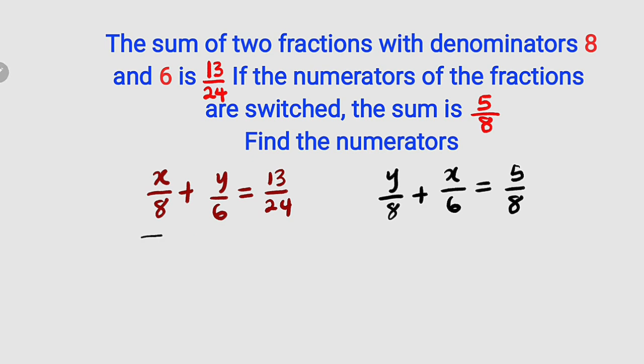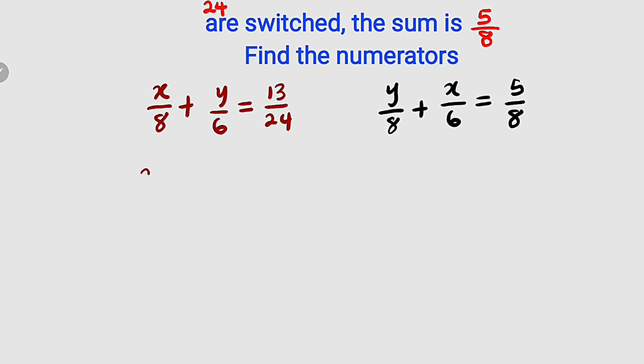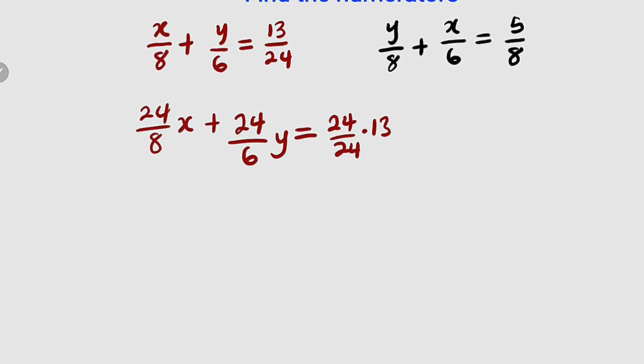First of all, I would like to clear these fractions. The LCM is 24, so I'm going to multiply all of these three terms by 24. So we have 24 divided by 8x plus 24 divided by 6y, and this is equal to 24 divided by 24 multiplied by 13. So if you simplify this, 8 can go into 24 three times, so we have 3x plus 6 can go into 24 four times, so we have 4y. This equals 13.